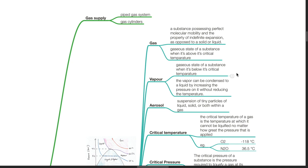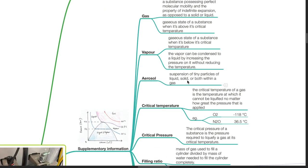The vapour can be condensed to a liquid by increasing the pressure on it without reducing the temperature. Aerosol is a suspension of any particles of liquid, solid or both within a gas.